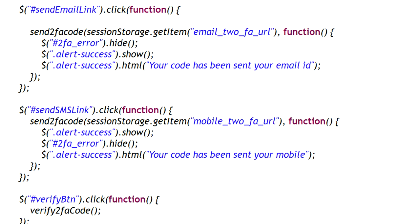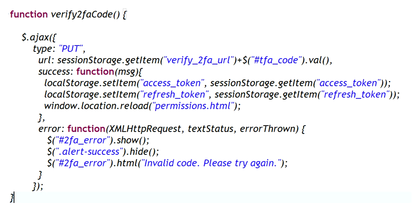If the code has been sent successfully in the callback method, I show a success message: if it is email, 'Your code has been sent to your email ID'; if it is mobile, 'Your code has been sent to your mobile.' I also added a click event for the verify 2FA code button. Once the user receives the 2FA code, they enter it in the text box and click the verify button. In the verify 2FA code method, I take the verify 2FA URL from session storage and the entered code from the text box. If verification succeeds with a 200 OK response, I retrieve the access token and refresh token from session storage, set them in local storage, and redirect to permissions.html. Otherwise I show 'Invalid code, please try again.'